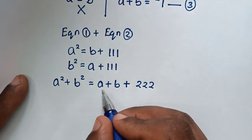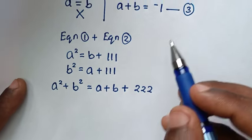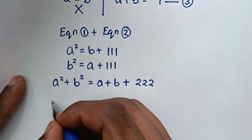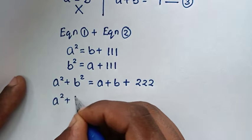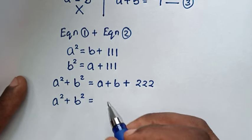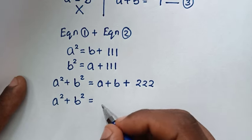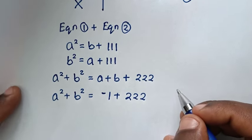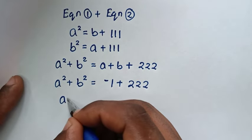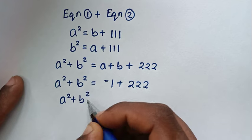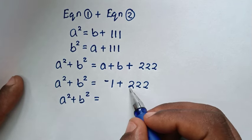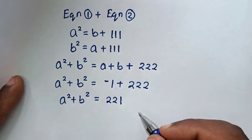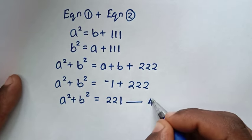Now, a plus b comes from equation 3, which is negative 1. So our equation becomes a squared plus b squared equals negative 1 plus 222, which gives a squared plus b squared equals 221. We call this equation 4.